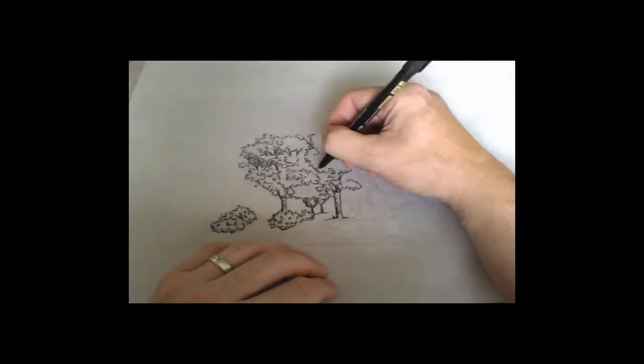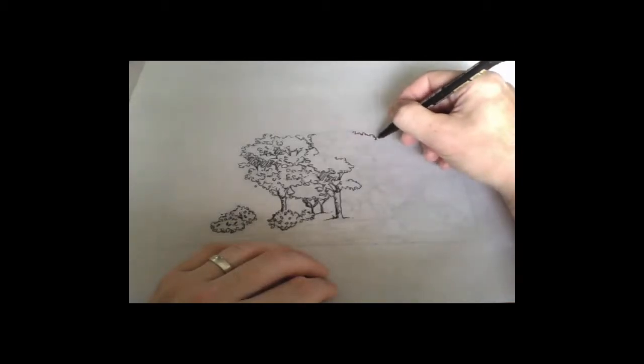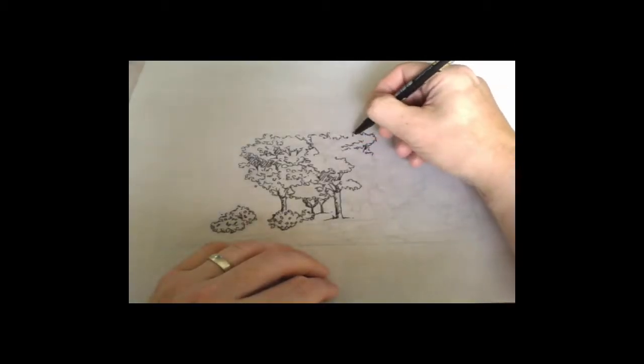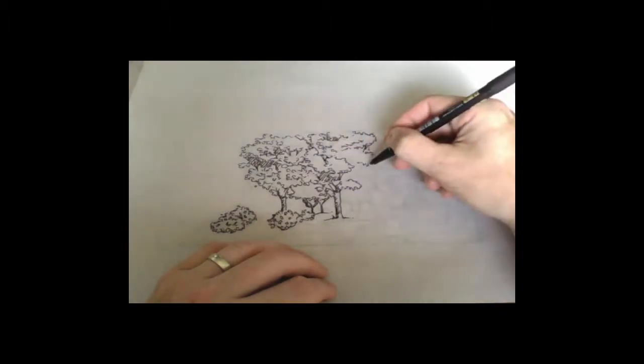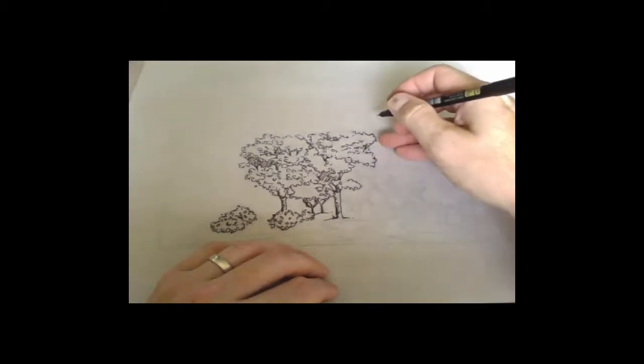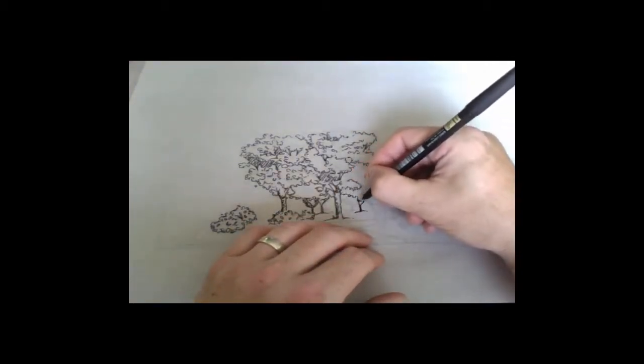Just adding line weight to the trees, thinking a little bit about shadow. You can see I'm adding some 45 degree stroke in the areas that would have shadow on the under canopy of the tree. I'm trying to figure out the minimum level of detail I need to get the point across.